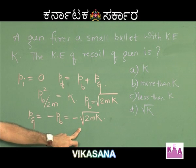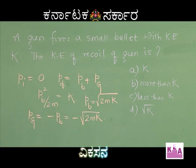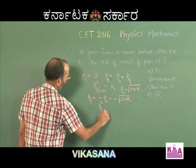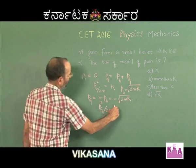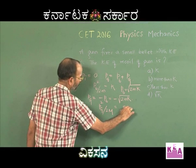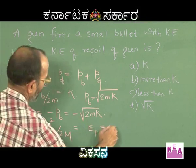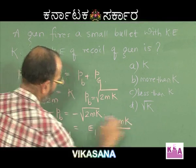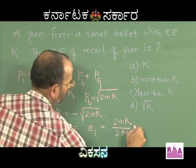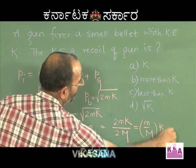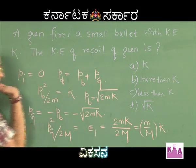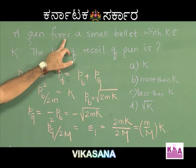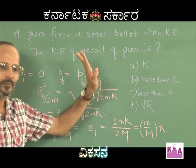The magnitude of the momentum of the gun equals the momentum of the bullet — both are √(2mk). However, the kinetic energies are not the same. Writing KE of the gun as P_G² divided by 2M (capital M for gun mass), we get E₁ = 2mk / 2M = (m/M)k. Since m/M is less than 1, the kinetic energy of the gun is less than k, confirming our initial intuition.